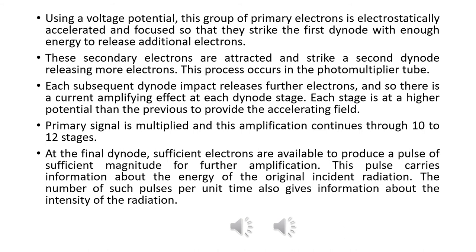This multiplication process takes 10 to 12 stages. A set of electrons is generated with sufficient strength, carrying information about the radiation. Using a voltage potential, this group of primary electrons is electrostatically accelerated and focused so that they strike the first dynode with enough energy to release additional electrons. These secondary electrons are attracted and strike the second dynode, releasing more electrons. Each subsequent dynode impact releases further electrons, creating a current-amplifying effect at each dynode stage. Each stage has a higher potential than the previous to provide the accelerating field.